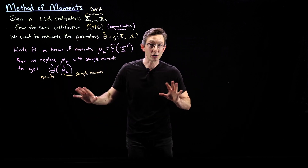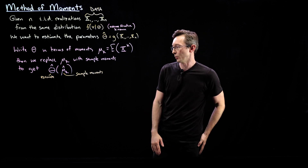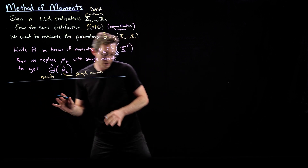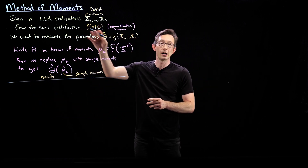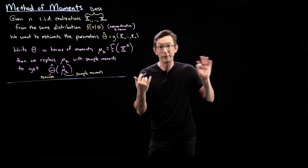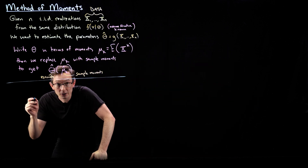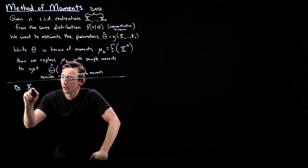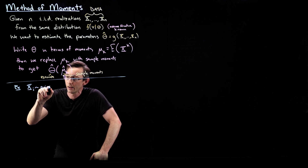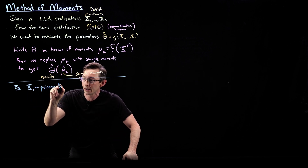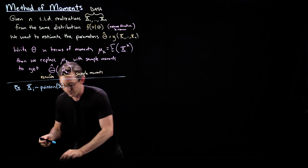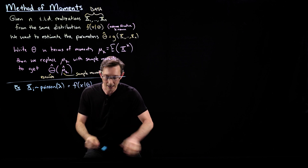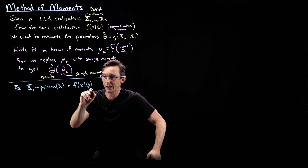This is really simple, and a couple of examples will make it totally clear. So let's do the first example: Poisson distribution. We're going to assume f is Poisson and try to learn lambda. So x_i is Poisson(lambda), and lambda is the unknown parameter — equal to f of x given theta, where theta is lambda.